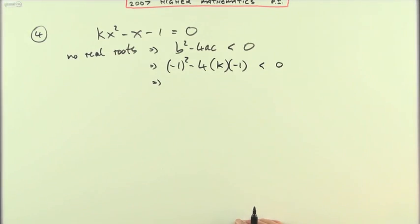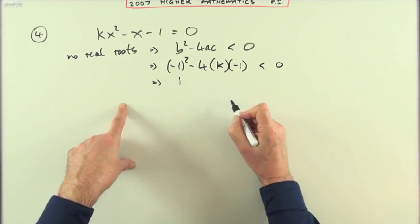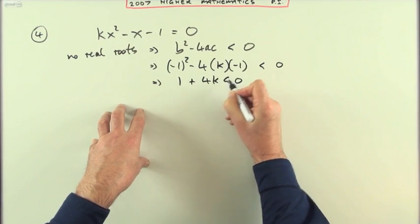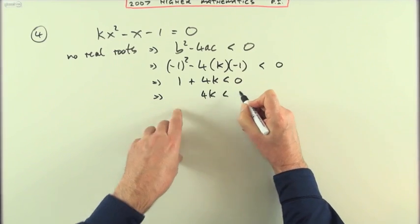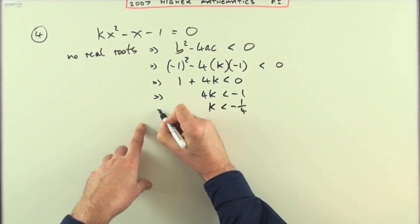Well straight away that's going to be a trivial one. That's just going to be a linear inequation. I've got one plus 4k is less than zero. So 4k is less than negative one, k is less than negative one quarter.